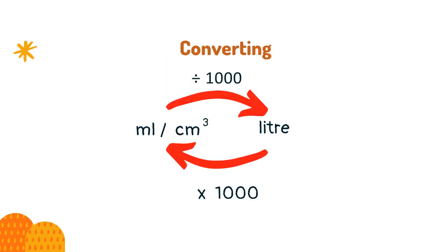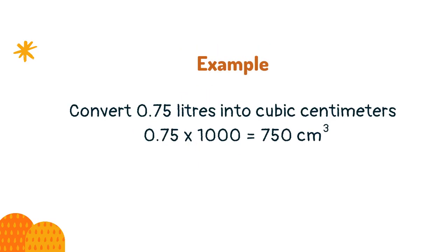Use this chart to help you convert between metric units. Convert 0.75 liters into cubic centimeters. 0.75 times 1000 equals 750 cubic centimeters.